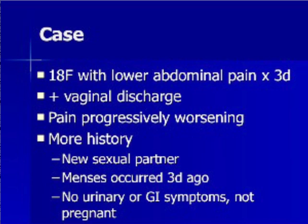An 18-year-old female presents with lower abdominal pain for 3 days with vaginal discharge. The pain is steadily getting worse. On further history, she has recently had a new sexual partner, has just had her period, and denies dysuria, frequency, urgency, vomiting, diarrhea, and is not pregnant. Based on your most likely diagnosis, what do you expect to find on physical examination?